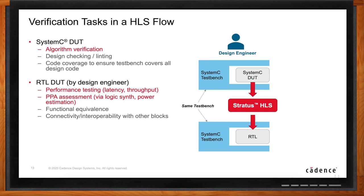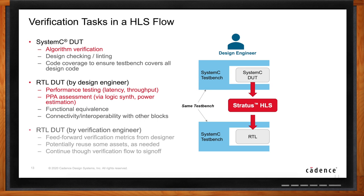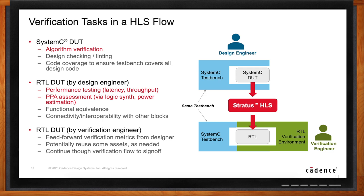You take the same 10,000 images and pass them through your SystemC module to make sure it works correctly — that's algorithm verification. Once you do that, you run Stratus HLS and get RTL, and you can verify that RTL using the exact same testbench — it's essentially a push-button flow. In the RTL simulation you measure things like latency and throughput. You can then take the RTL through logic synthesis to get area and timing estimates, or through power estimation to get power estimates, while confirming the RTL produces the same results as the SystemC model.